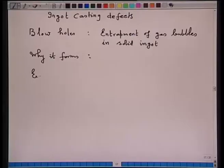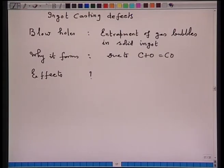Therefore, during casting, the dissolved oxygen reacts with carbon and on account of this reaction, CO gas evolves and escapes from the ingot to the atmosphere. When the top portion of the ingot gets solidified, there are no chances of the CO gas bubble escaping outside the ingot, and therefore these bubbles are entrapped — resulting in what we call a blow hole. The cause is the C + O = CO reaction during solidification.